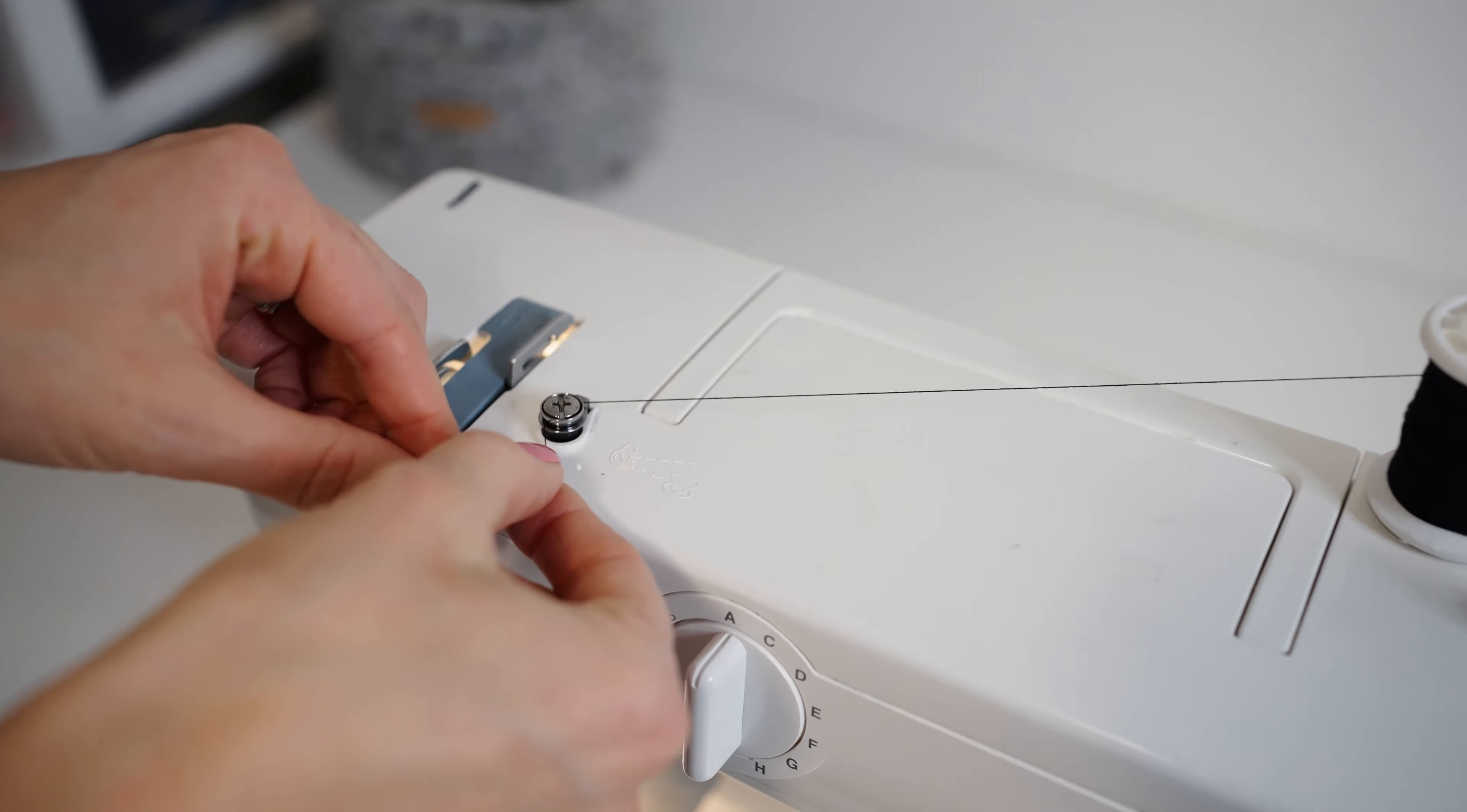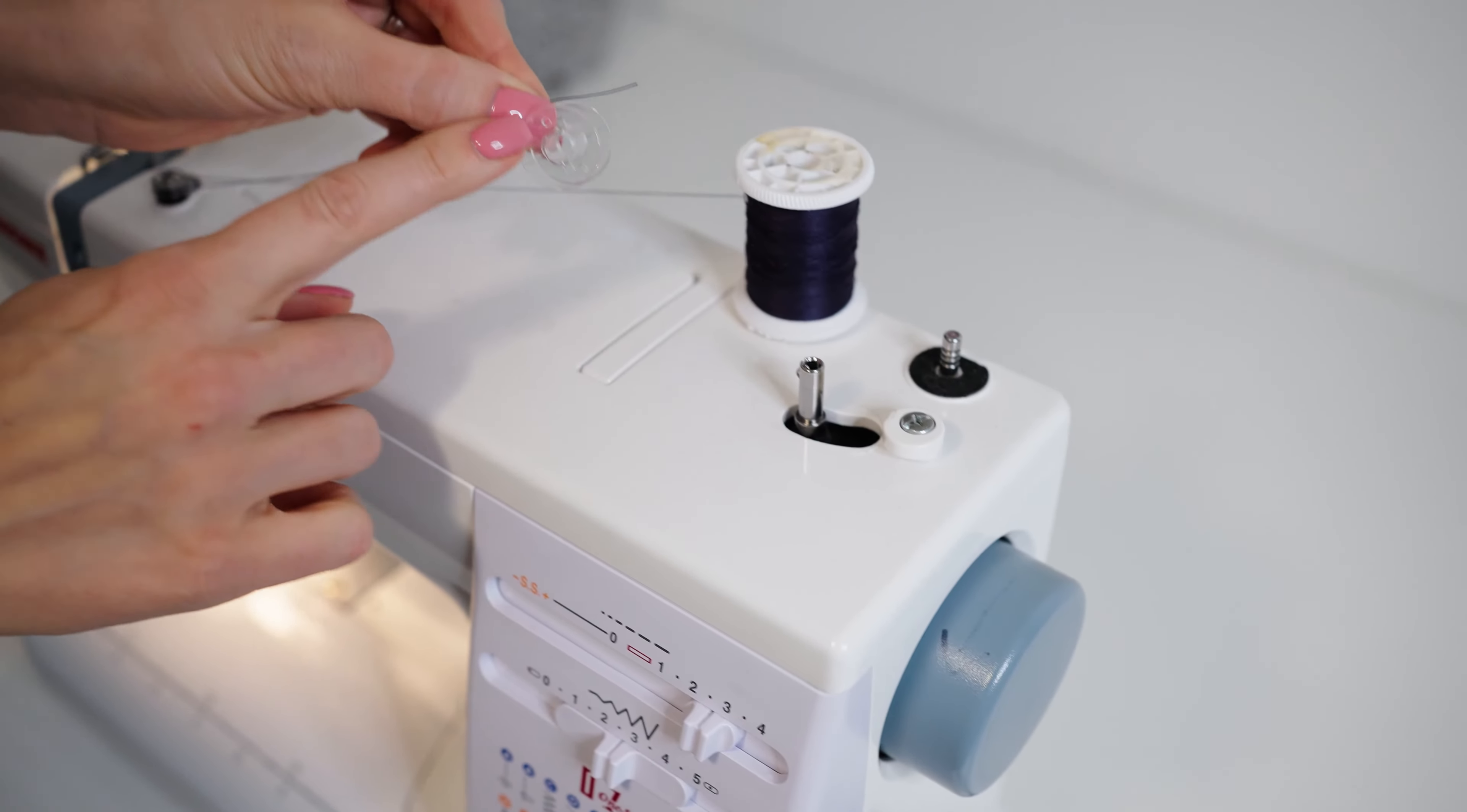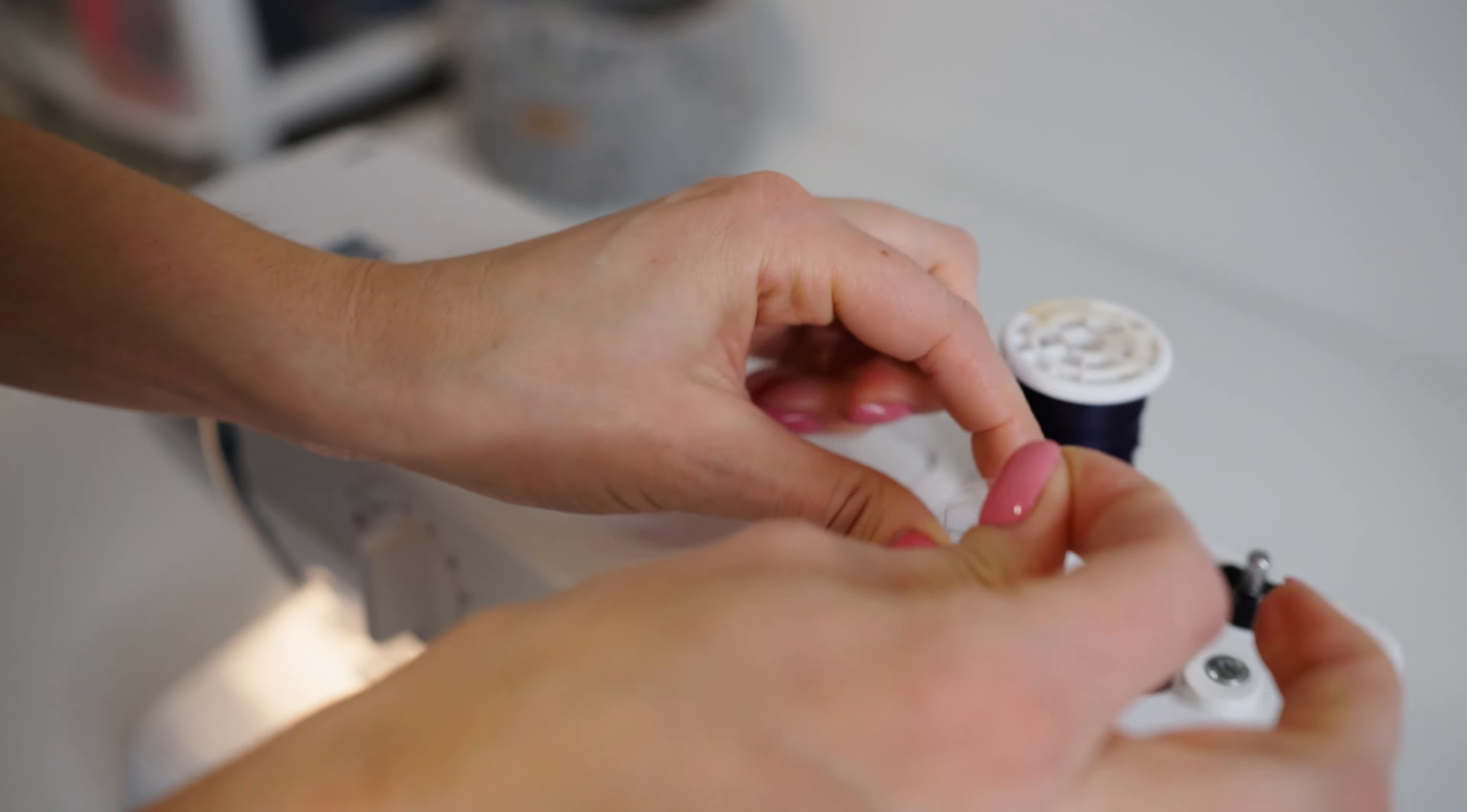All you have to do is wind it around this bobbin tension disc. Take your bobbin - there's two holes. You need to go only through one of them, so go from the middle up one hole. That's all.